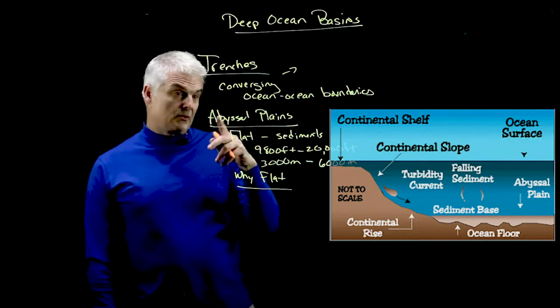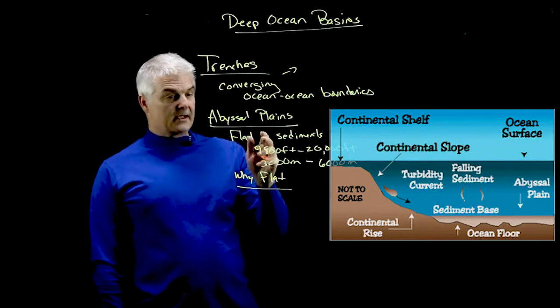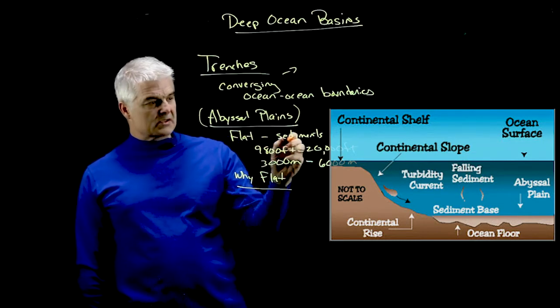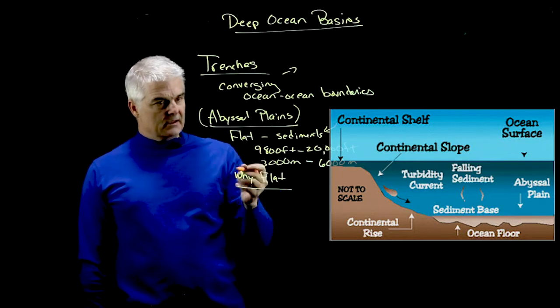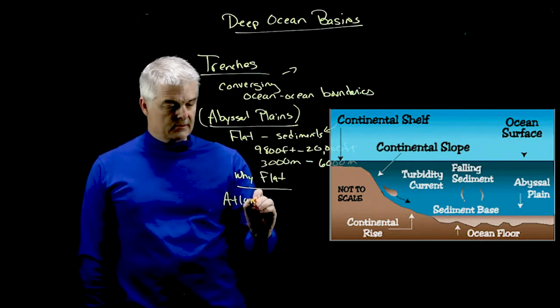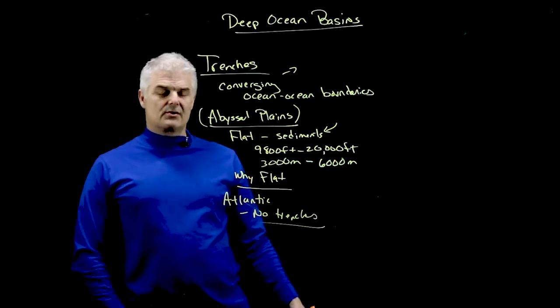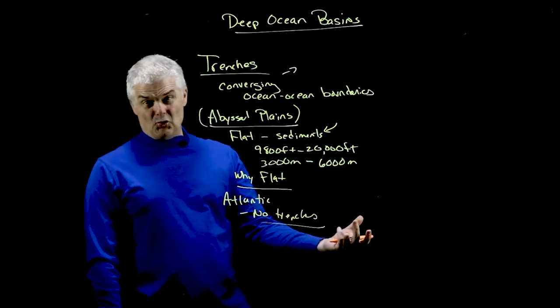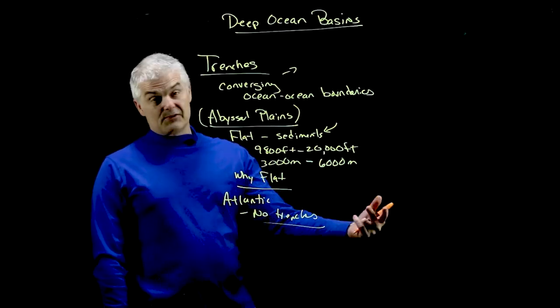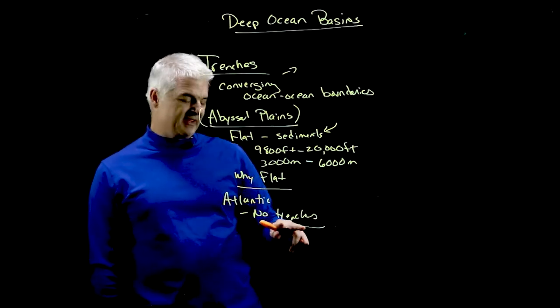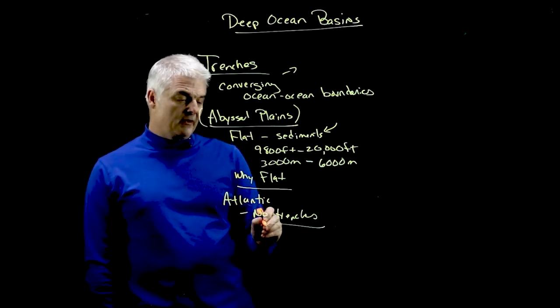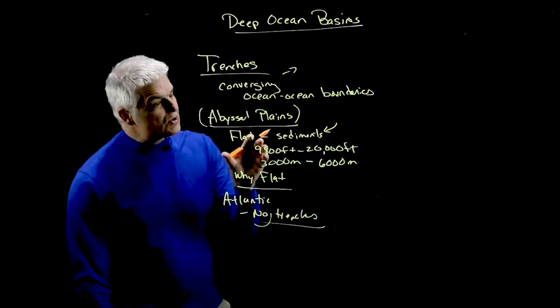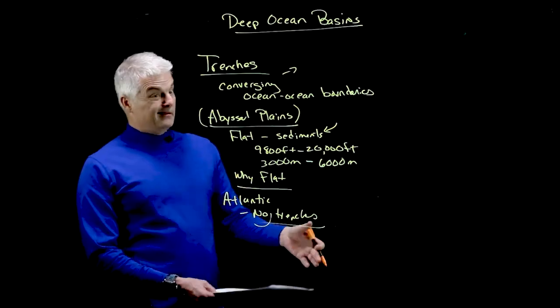If you look around the oceans, the Atlantic has the most abyssal plains. Why is that? What's causing this is the buildup of sediment. The Atlantic Ocean doesn't have any trenches, no converging plate boundaries. What happens with the trench is it's like a hole that can collect more sediments. You get the flat regions in the Atlantic Ocean because it doesn't have, probably no is an overstatement, but very few trenches. Without the trenches, you're not going to get a place to collect the sediment.